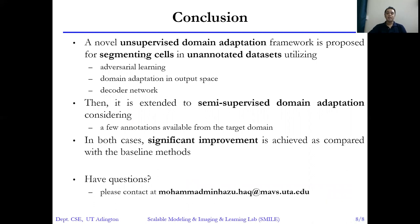In conclusion, we propose a novel unsupervised domain adaptation framework utilizing adversarial learning domain adaptation in output space and a decoder network. We then extend this to semi-supervised domain adaptation, considering that we have a few annotations available from the target domain. In both cases, we achieve significant improvement over the baseline. Please feel free to contact me at the provided email address. Thank you for attending.